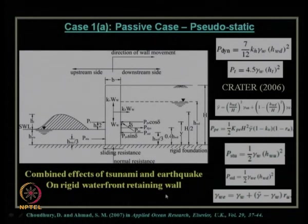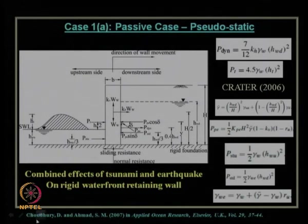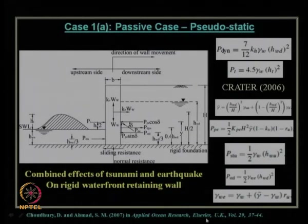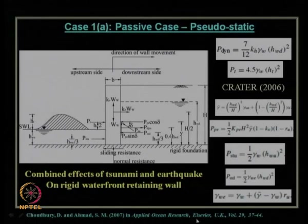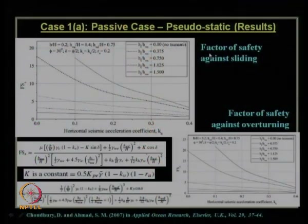This approach was published in Choudhury and Ahmed 2007 in the journal Applied Ocean Research (Elsevier), volume 29, pages 37–44. Using a simple limit equilibrium approach for all forces involved, results for factor of safety against sliding and overturning were obtained. This figure shows the factor of safety against sliding F_s,s versus horizontal seismic acceleration coefficient k_h for given values of b/H, h_w/H, h_wd/H, phi, delta, and k_v.